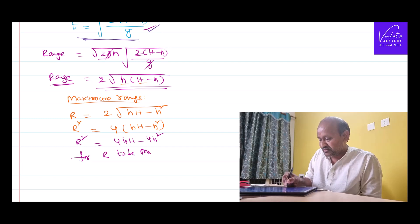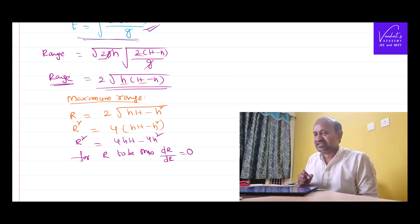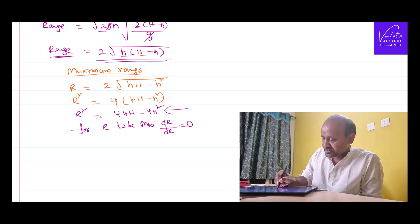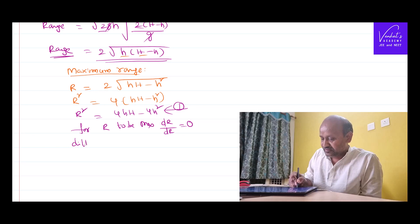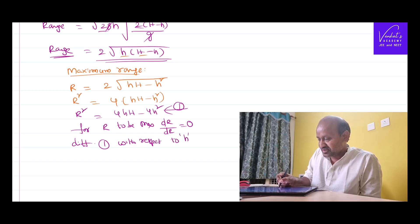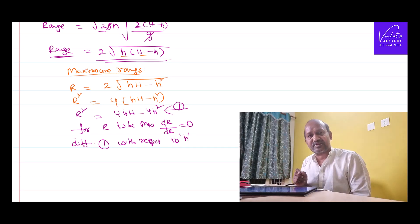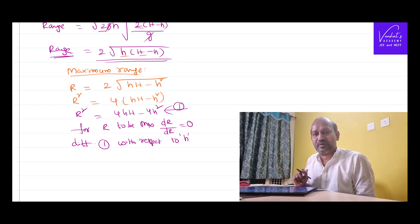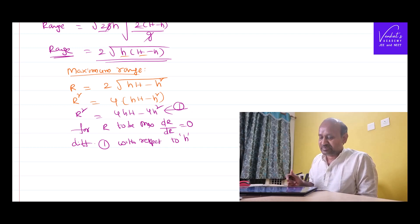For this range to be maximum, as per differentiation, dR by dh - for any function to be maximum, this differentiation has to equal 0. So let's differentiate this equation with respect to h. Here small h is a variable. We want to calculate where shall I leave that small opening along the vertical side of that tub system, so that the water comes out and goes to a maximum range.